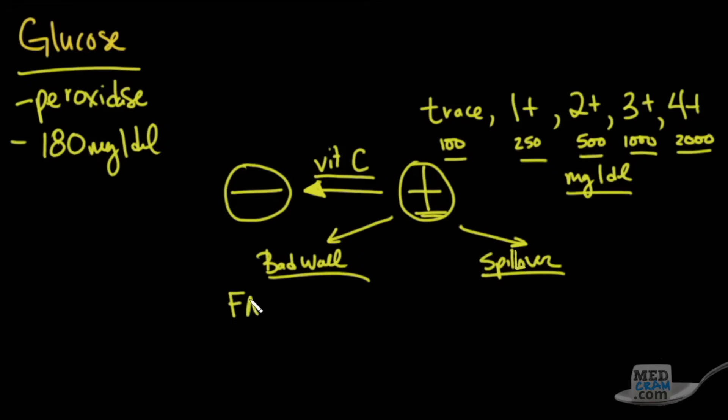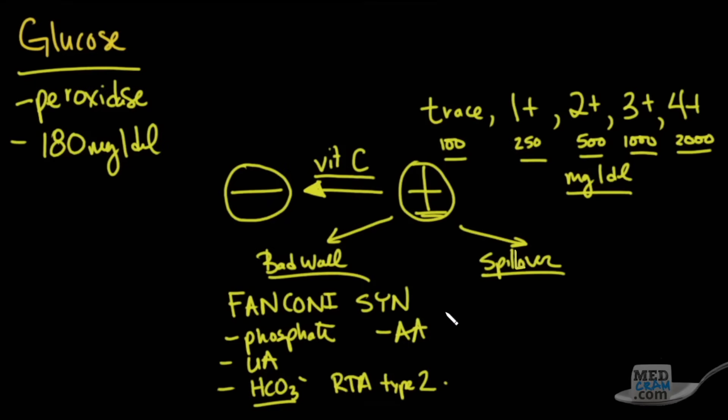This is sometimes known as Fanconi's syndrome. With Fanconi's syndrome, you have a problem with reabsorption at the proximal convoluted tubule. So you also see dumping of phosphate, dumping of uric acid, dumping of bicarbonate. If you remember, if you don't reabsorb bicarbonate well at the proximal convoluted tubule, this is known as a renal tubular acidosis type 2. And then the other thing that you see that gets dumped are amino acids.